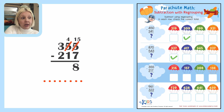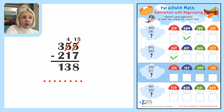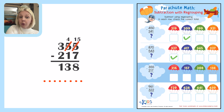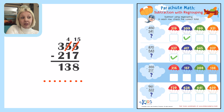Then four minus one is going to be three, and three minus two is going to be one. So the answer is 138. I'm going to come over here and look for 138 — there it is, 138. If I didn't find the number over here, that would let me know I did something wrong. Always make sure you see the number — and since I do, I'm going to go ahead and check it.